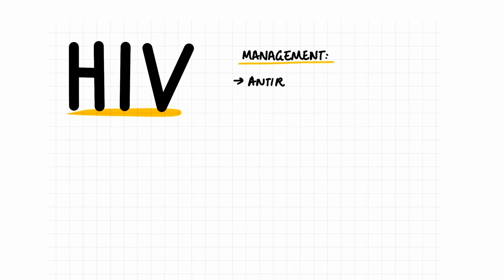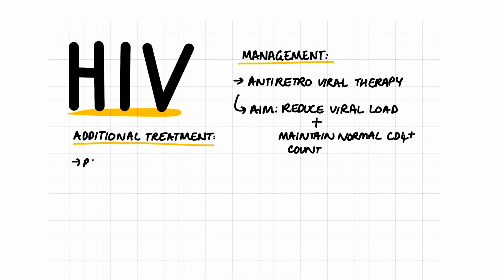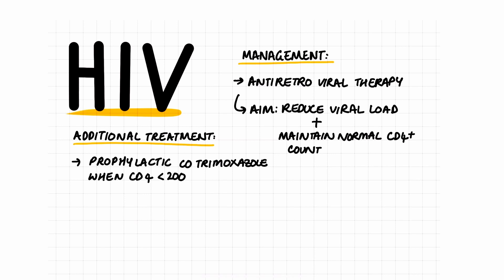The management of HIV is usually done by a specialist and it involves antiretroviral therapy. This is given to all patients regardless of how far along they are with their disease. The aim of the antiretroviral therapy is to maintain a normal CD4 and an undetectable viral load. If this has been achieved, the patient can then be managed as we would manage a negative HIV patient. Alongside the antiretroviral therapy, patients can also be provided with other additional measures to prevent associated complications — for example, the prophylactic use of co-trimoxazole in patients with CD4 counts of less than 200, in order to protect them against PCP.